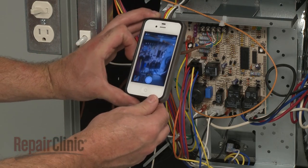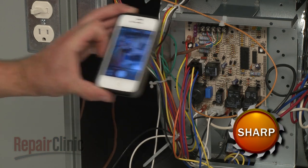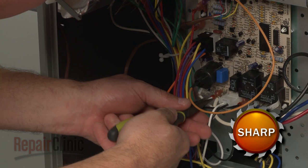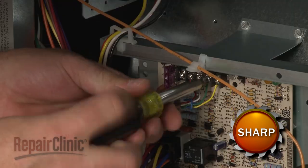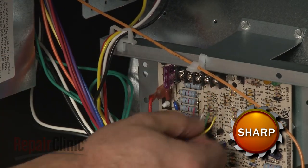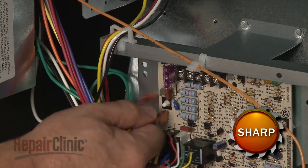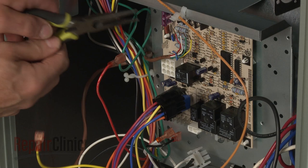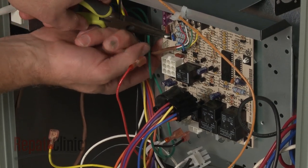Note the orientation of the wires connected to the control board. Then disconnect them. Use needle nose pliers to depress the tabs to release the old board from the mounting pins.